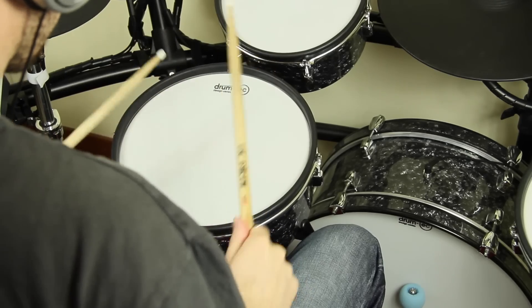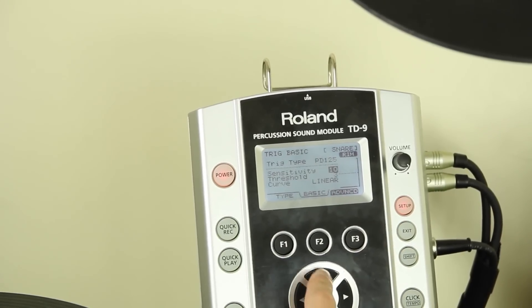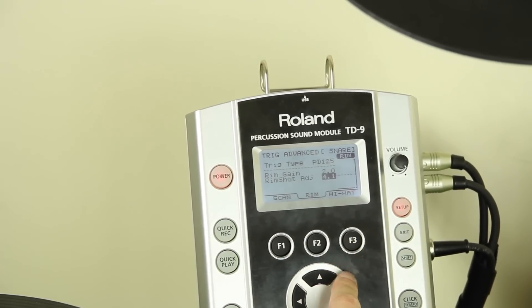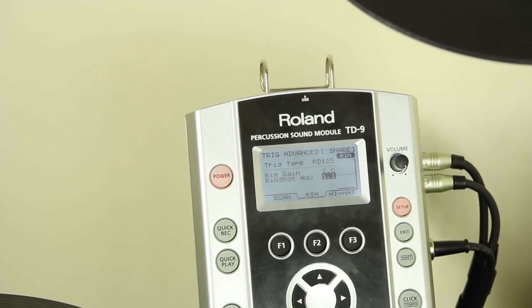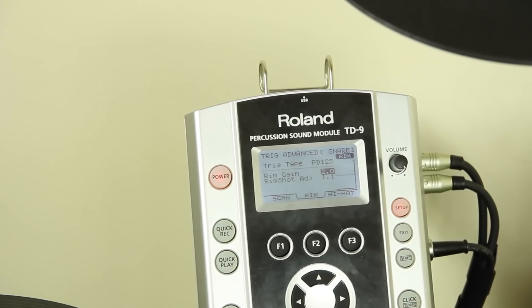The rim gets triggered by hitting the head, which means we have to change the settings. We need to decrease the rim shot adjustment number to make sure the rim does not get triggered by hitting the head. A standard Roland PD-125 head rim adjustment is around 2.